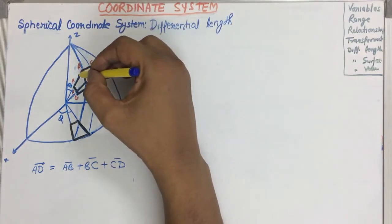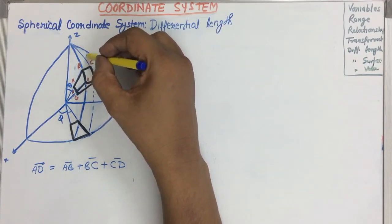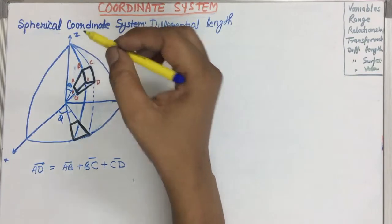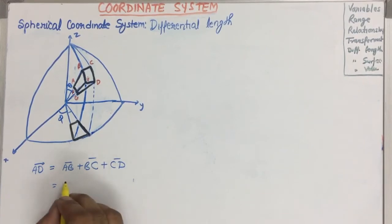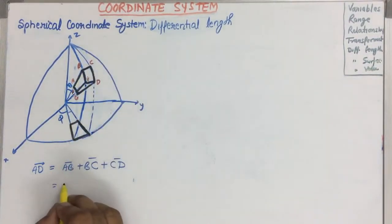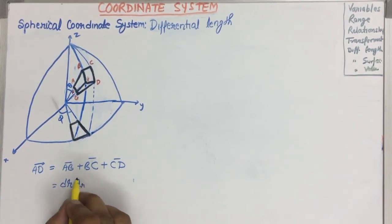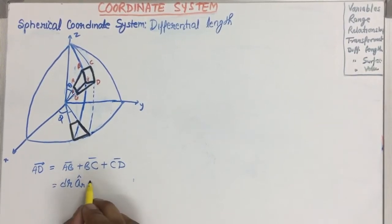So this is the small radius dR, and the direction of dR will be this one. So AB can be written as: AB is changing in this direction, so AB can be written as dR in the direction of R.